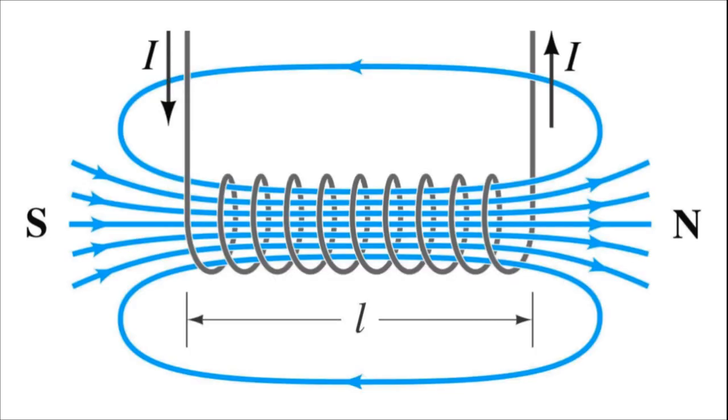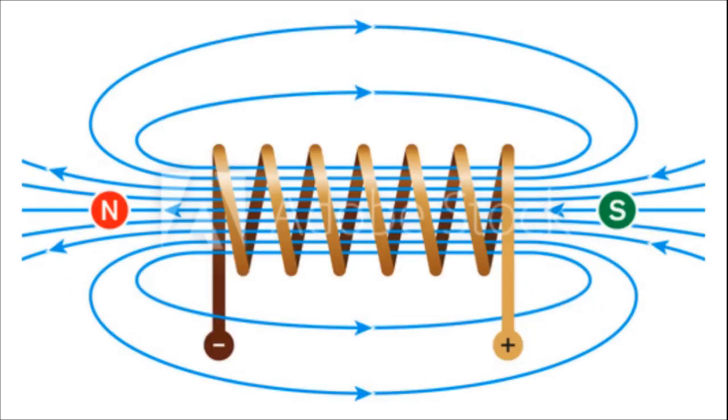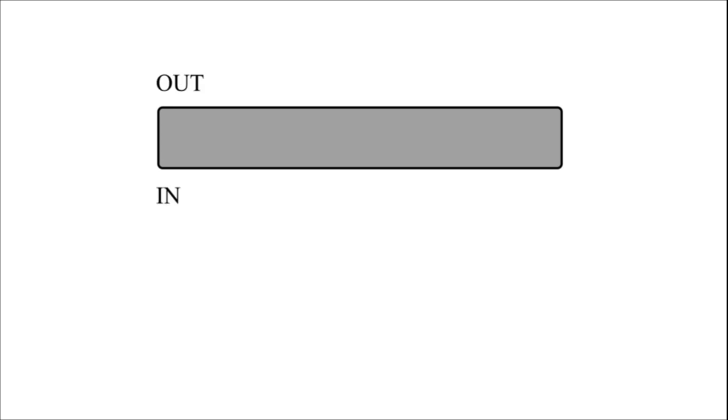As we have known, a loop of wire creates an electric field with north and south pole. If we take an iron rod, loop a wire in it with the in and out, and a current running from left to right,